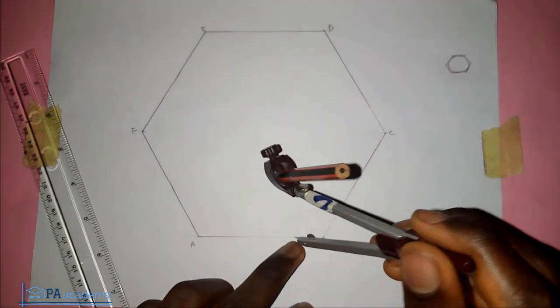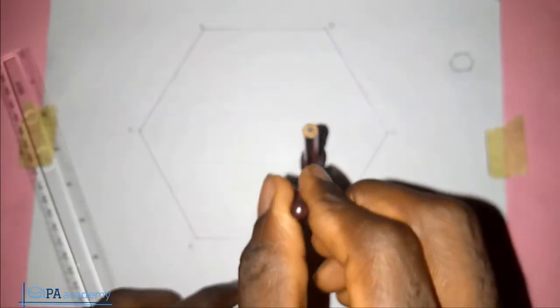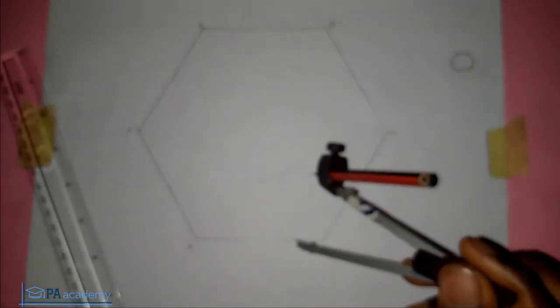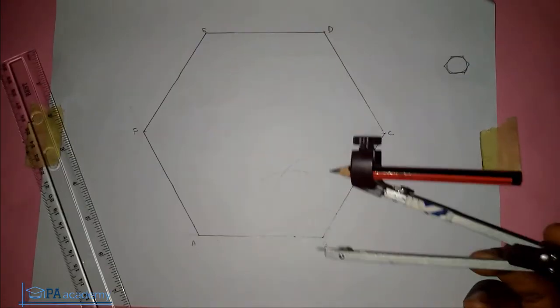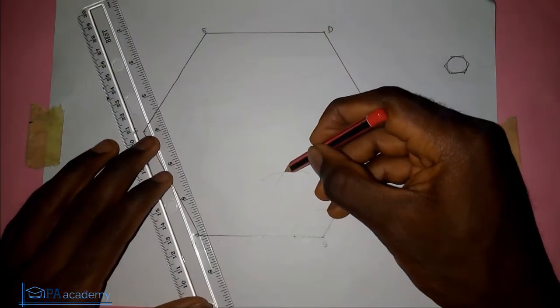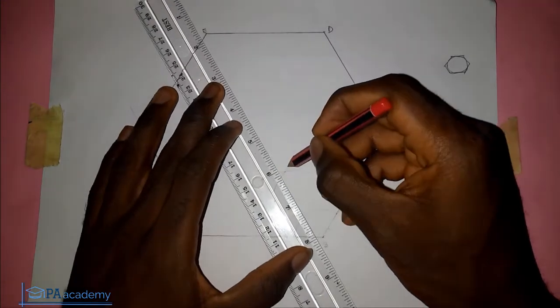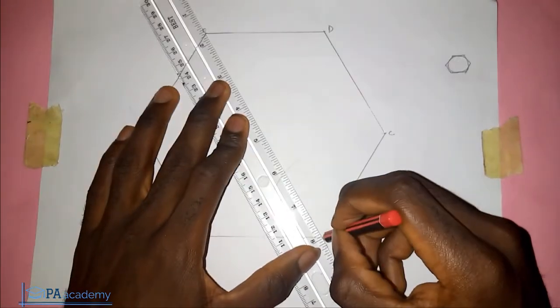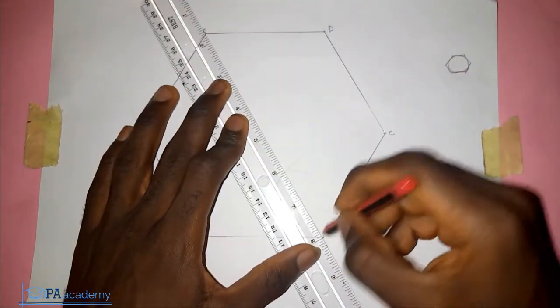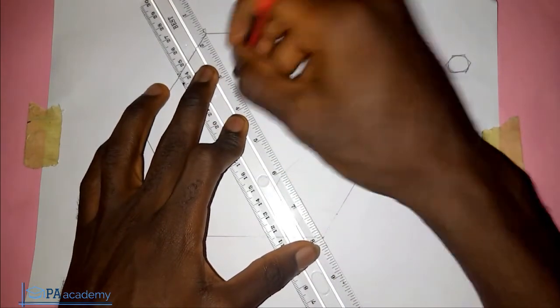From those two points the arcs are going to intercept. From the point where they intercept, draw a line straight to point B. You can see what we've just done.